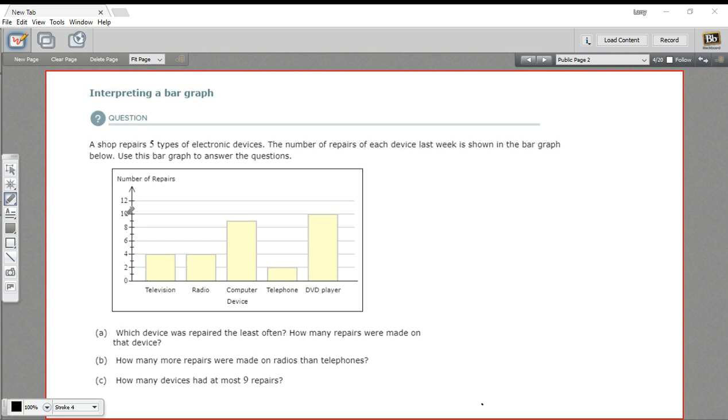Down here at zero, that'd mean no repairs. Up here at 12 would mean 12 repairs. And then we've got five different types of electronic devices: television, radio, computer, telephone, and DVD player.